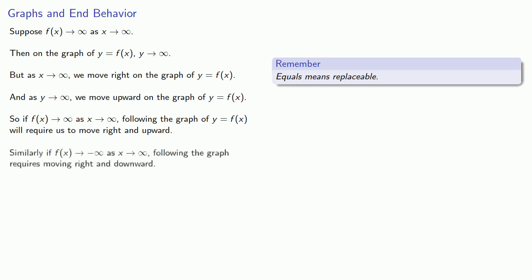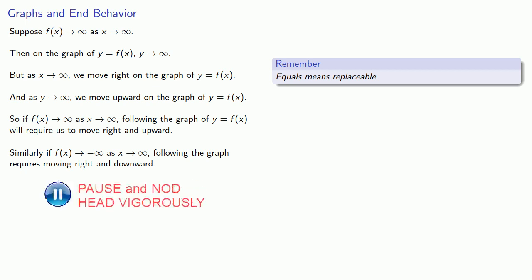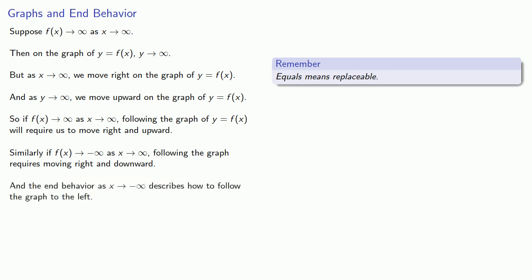Similarly, if f of x goes to negative infinity as x goes to infinity, following the graph requires moving right and downward. And the end behavior as x goes to minus infinity describes how to follow the graph to the left.